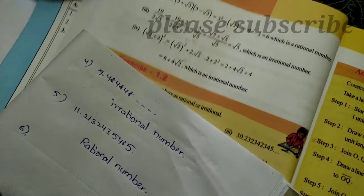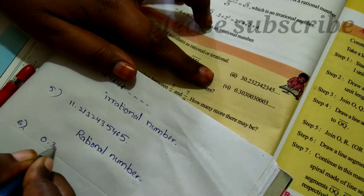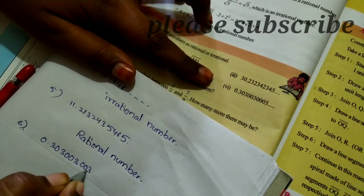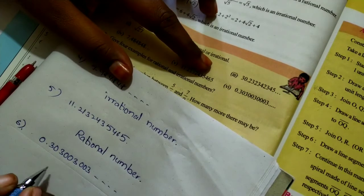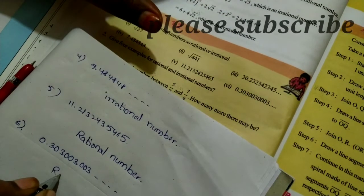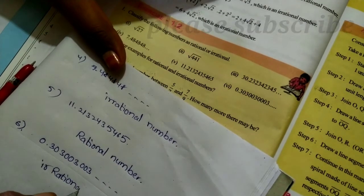Next number is 6. This number is 0.303003000300003. This number continues to be the same pattern. So this is irrational number.